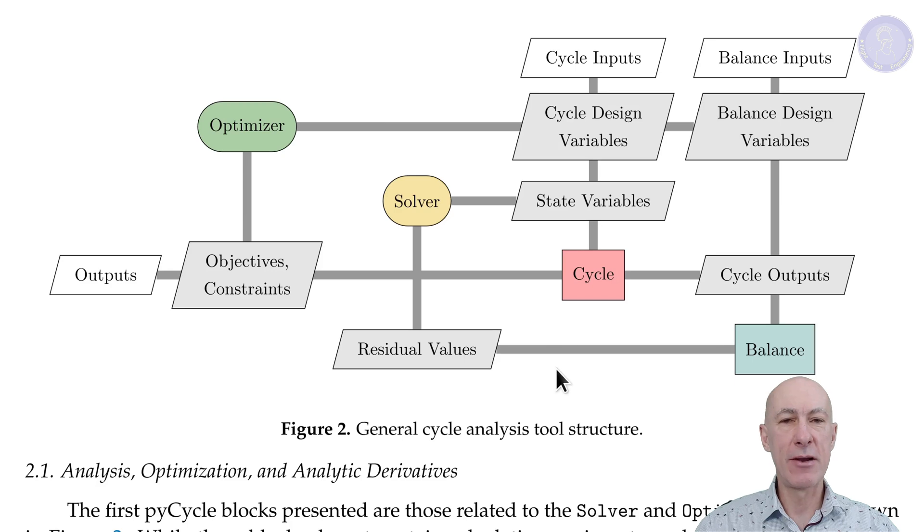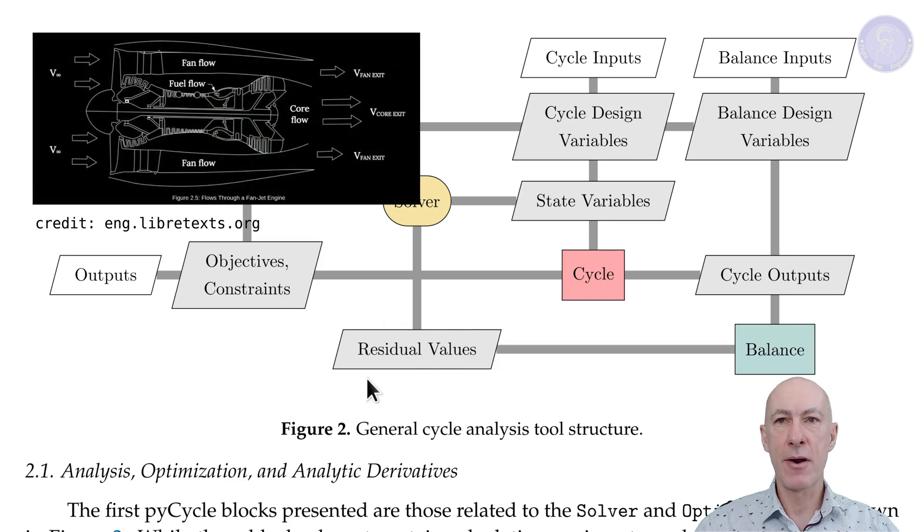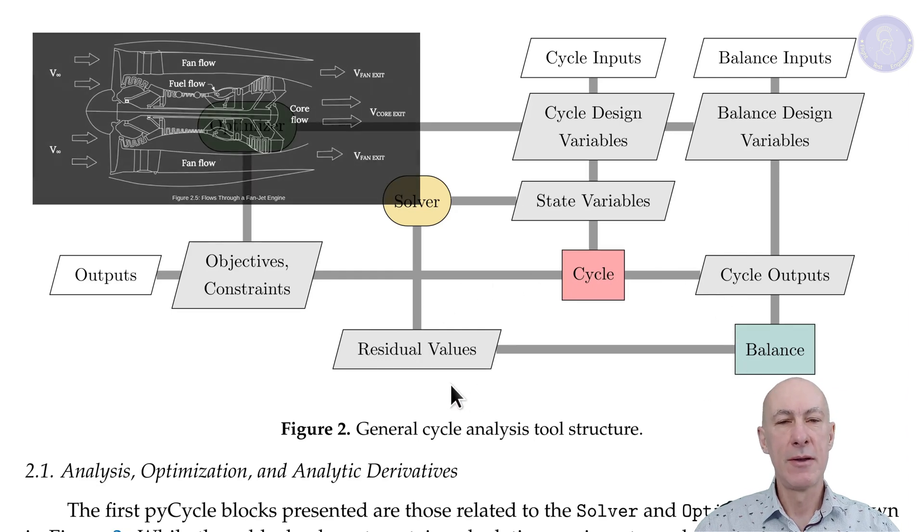It implements a set of residual equations and these equations express things like the sum of torques on each of the shafts must be zero. That is the conservation of energy. The mass flow calculated for each component must be equal to the neighboring components. That is the conservation of mass. And the desired performance targets like thrust and combustor temperature, they should be met.